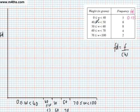6 divided by 10, class width is 10, that's 10 units, frequency is 6. 6 divided by 10, 0.6. 8 divided by 10, 0.8. 4 divided by 10, 0.4.